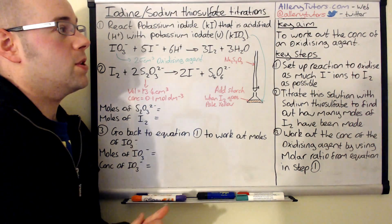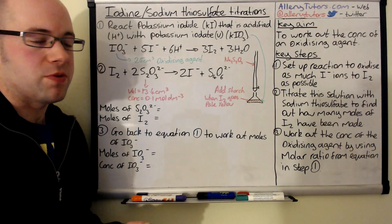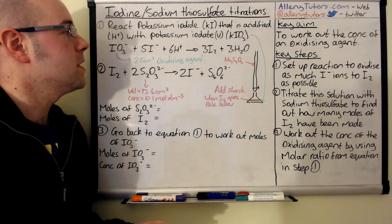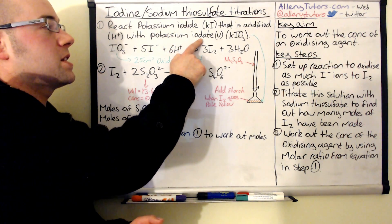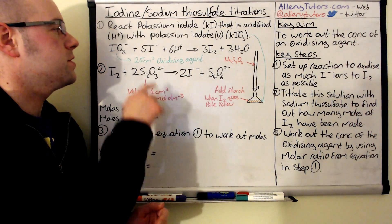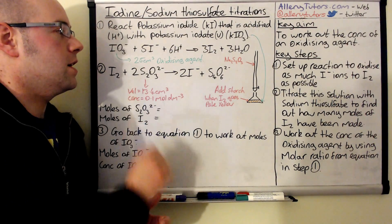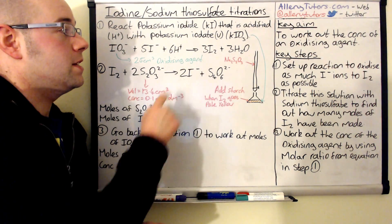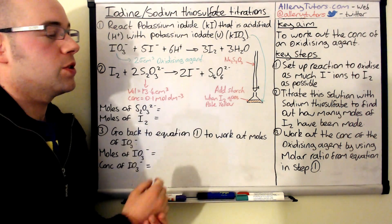The key aim is to work out the concentration of the oxidizing agent. The first thing we do is set up the reaction to oxidize as much I⁻ ions to I₂ as we possibly can. So we have IO₃⁻, which is our iodate ion from potassium iodate — this is our oxidizing agent — and it oxidizes I⁻ to form I₂. The I⁻ is colorless, the solution is acidified with 6H⁺, and the product iodine is a dark brown color in solution.